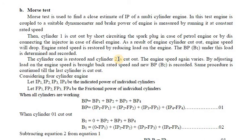The next important test is the Morse Test, which is also conducted in the energy conversion lab as an experiment. The Morse Test is used to find a close estimate of indicated power of multiple-cylinder engines. In this test, the engine is coupled to a suitable dynamometer and the brake power is measured by running it at a constant rated speed. This test is particularly applied for multi-cylinder engines.